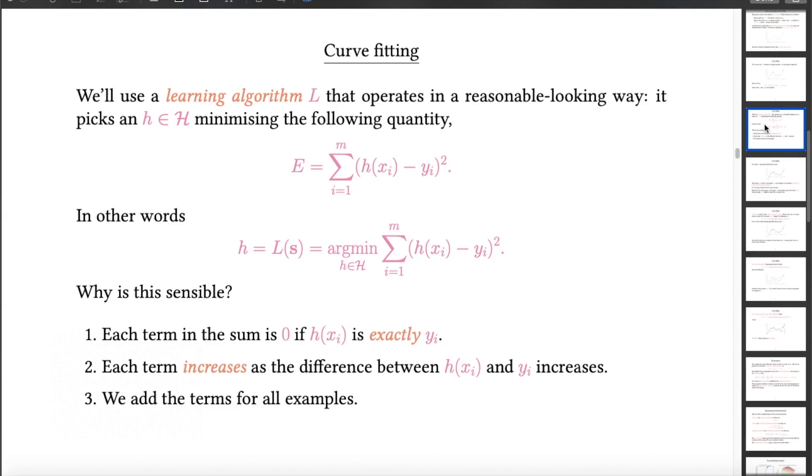Now I'm going to use a learning algorithm that I'm initially going to motivate in a way that hopefully looks reasonable. In order to guess what h prime is, I'm going to pick a function h from a hypothesis space that minimizes this particular measure of error. Now this measure of error just takes each example, xi, yi. It uses the function that I'm getting to choose, h, and comes up with a value of h, and then it squares the difference between that and the actual value that I have in the training set. And finally, it sums up those quantities over all of the training examples.